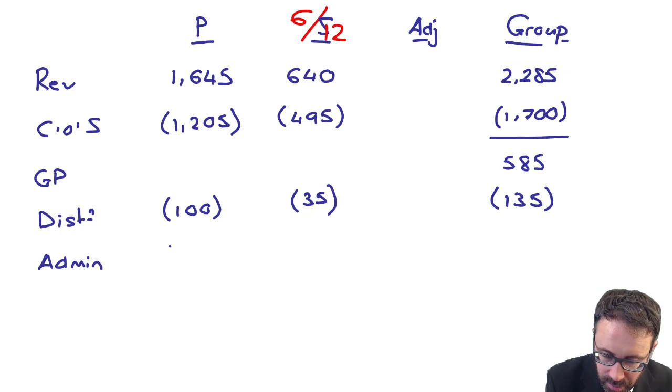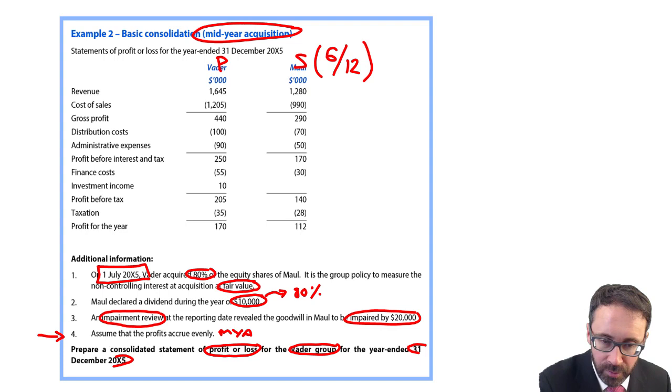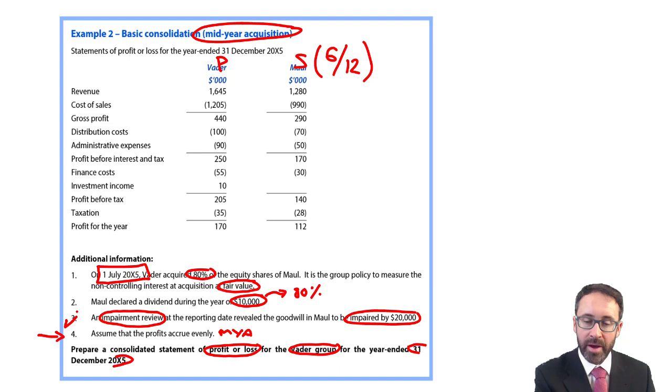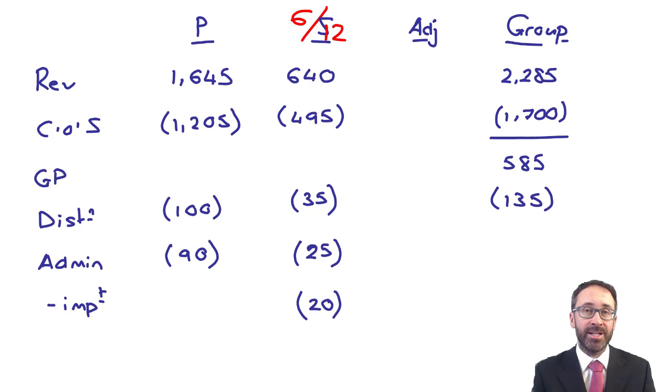I've then got my admin costs. So it's 90 of the parent. The subsidiary is 50. So six-twelfths of that is 25. And that's where you then need to be a little bit careful. Because we need to go through and make sure that we adjust for the impairment. It's $20,000. The goodwill is at fair value. So my impairment there, and this is where you've got to be careful, is one, you put it in S's column. So put whatever figure you've got in S's column. Two, make sure it's in brackets because it's an expense. And then three, don't prorate it by six-twelfths. No, don't do that.